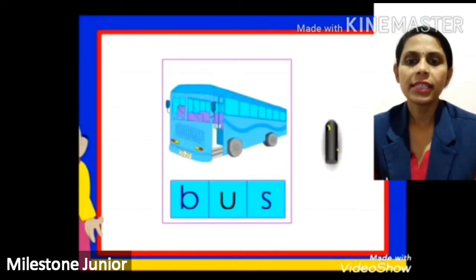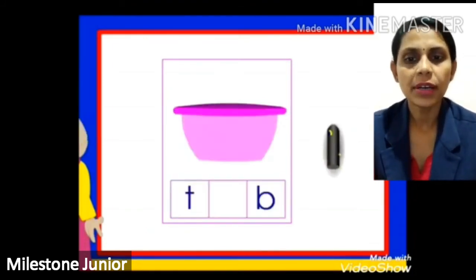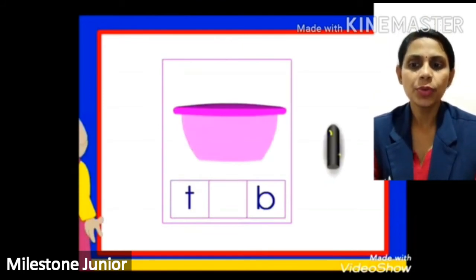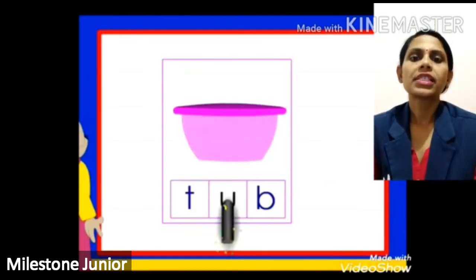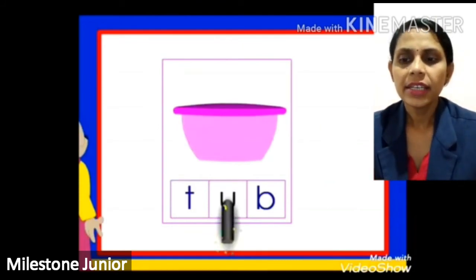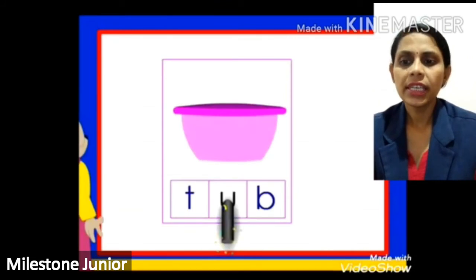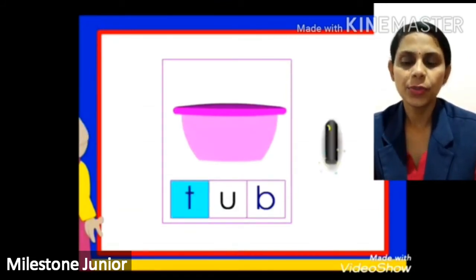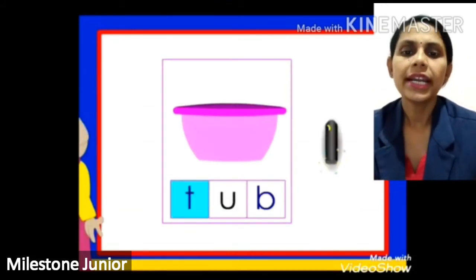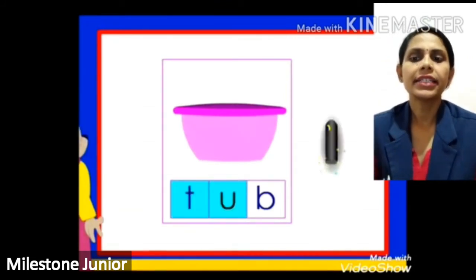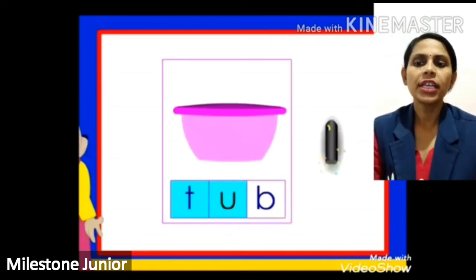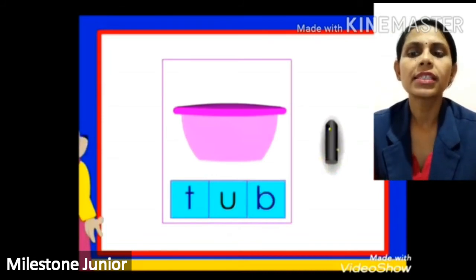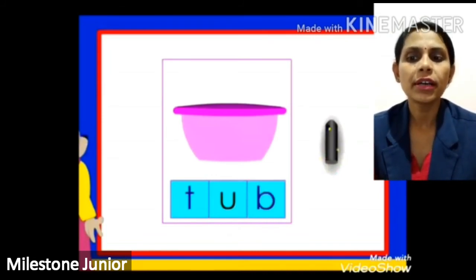Now this is the picture of a tub. Fill in vowel U here, now start reading from T. So T, then letter U, then letter B — T, U, B, tub. This is the picture of tub.